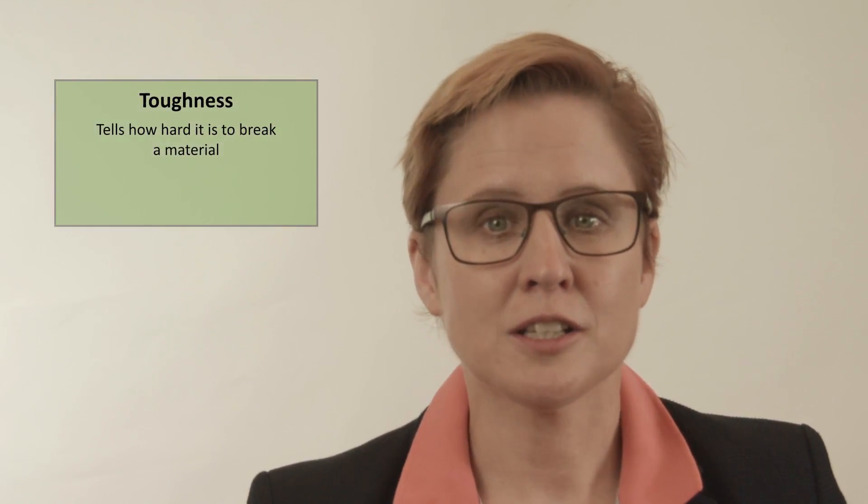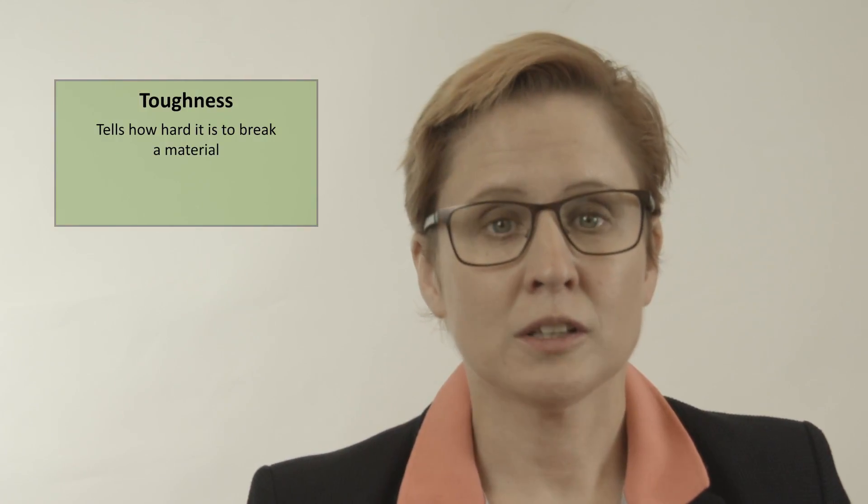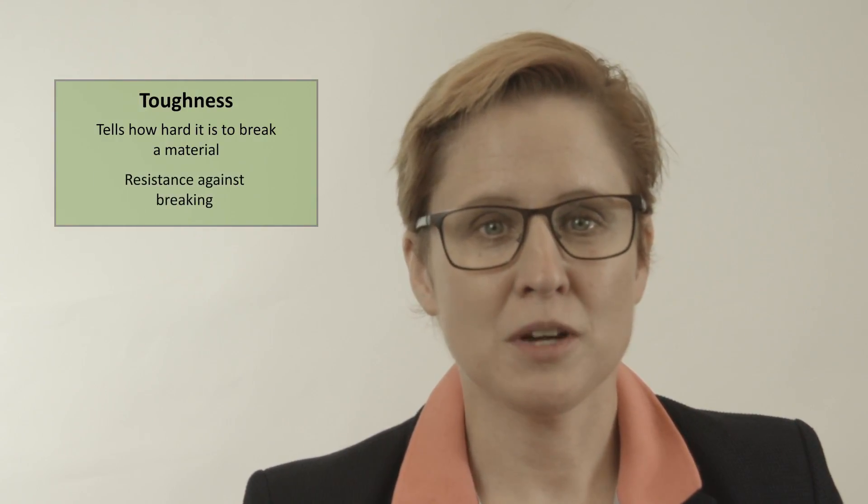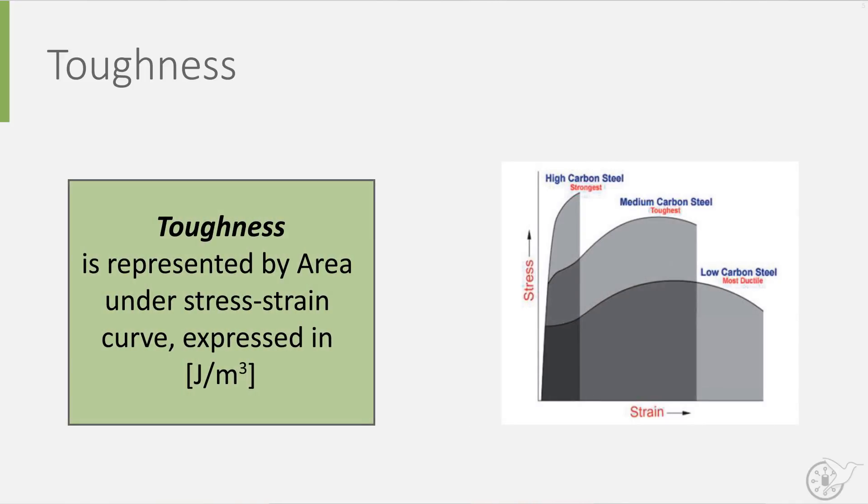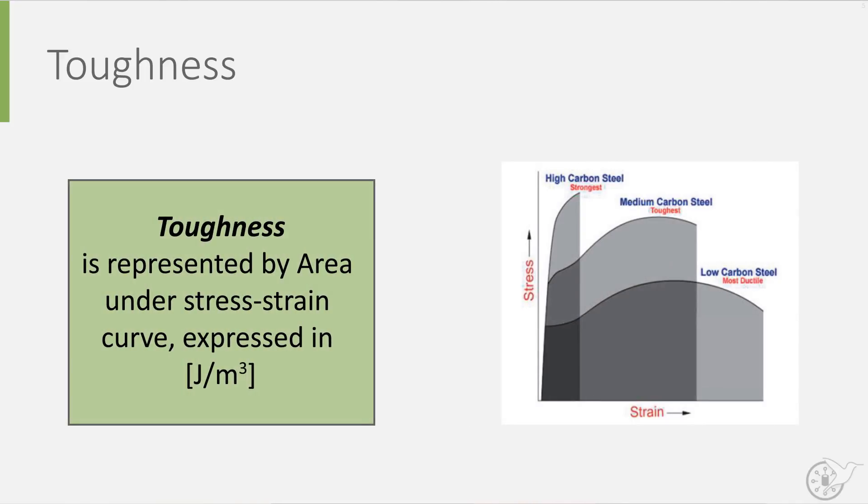Another important material property is toughness. Basically, it tells you how hard it is to break a material. So, we can look at toughness as the resistance against breaking. This is often represented by the area under the stress-strain curve, and has the unit of joule per cubic meter, or the energy per unit volume.